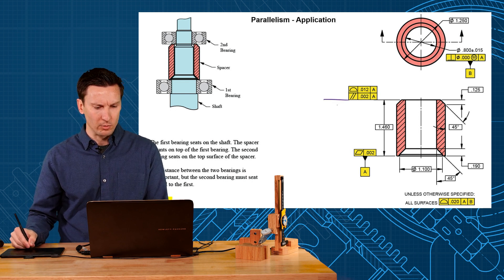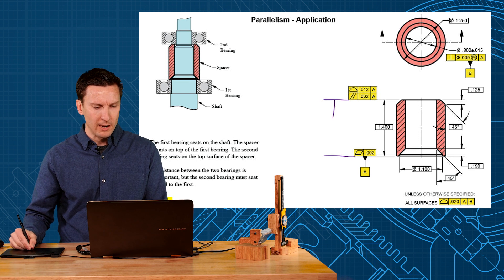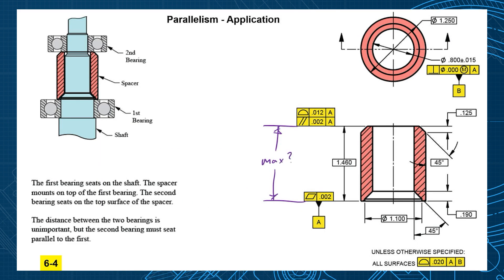Now let's see if that makes sense to you. From the top to the bottom, what would be the maximum height that you can have in this part? That's all about the profile tolerance. The profile tolerance controls the location, that would be plus or minus six. So the max height here could be 1.466.